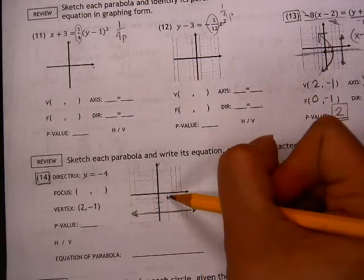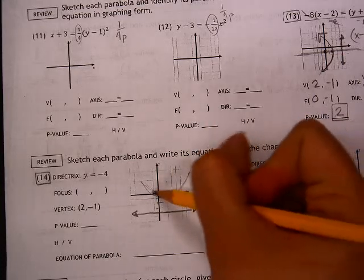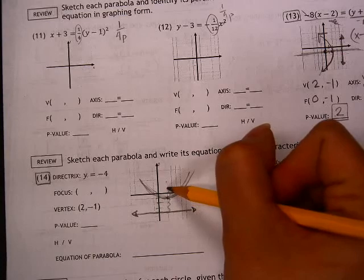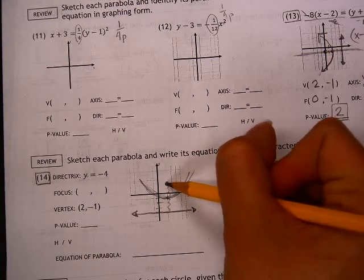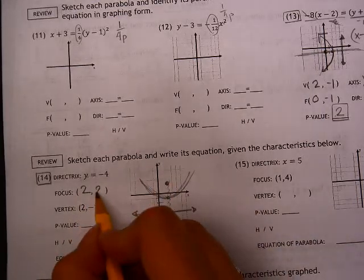And then from there, this is my vertex. My focus is going to be inside my parabola. So this is 1, 2, 3. That is my focus. So that was over at 2 comma 2.